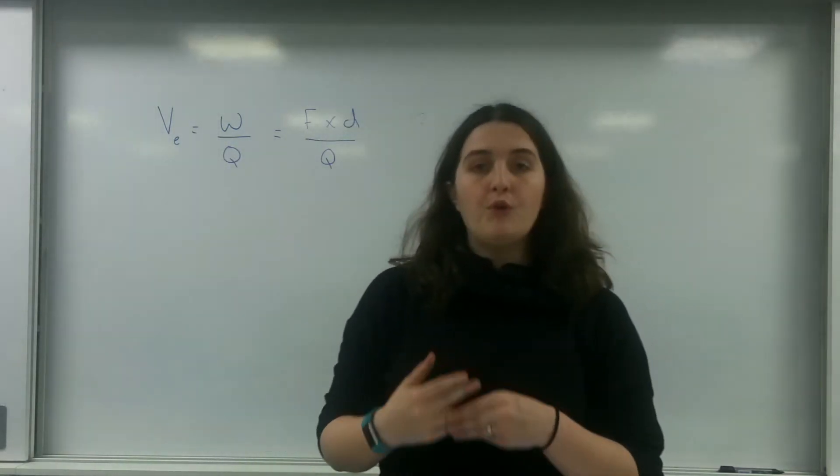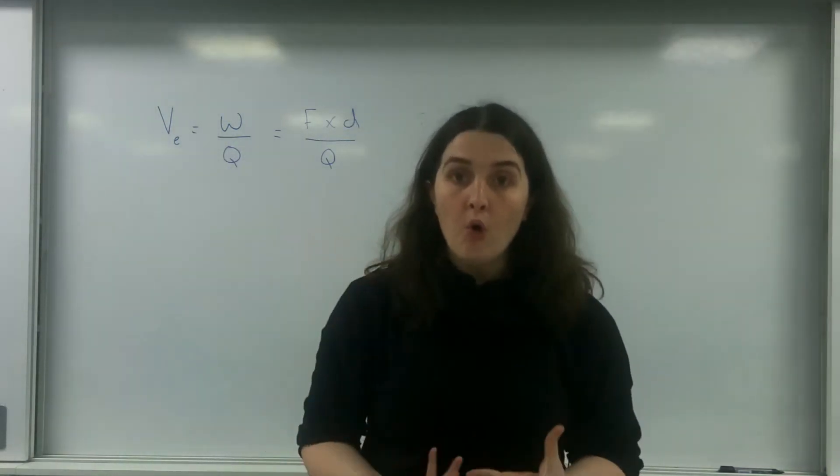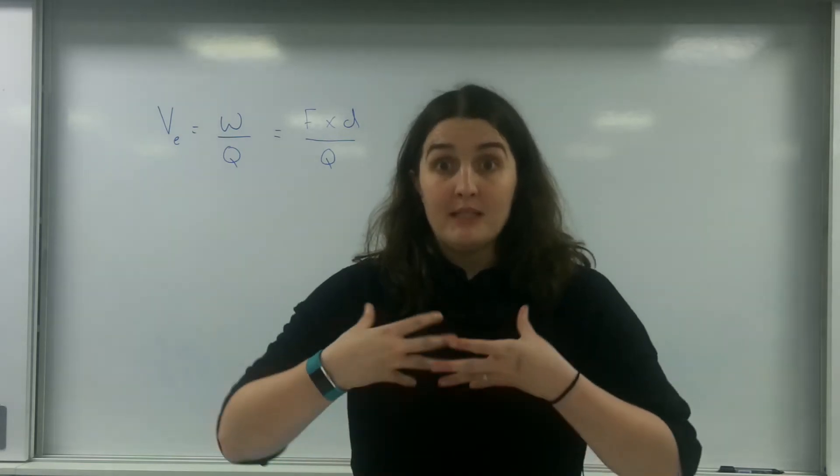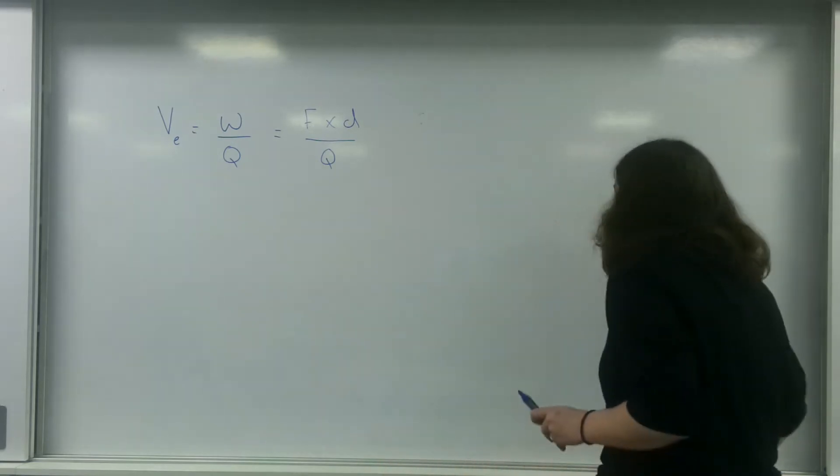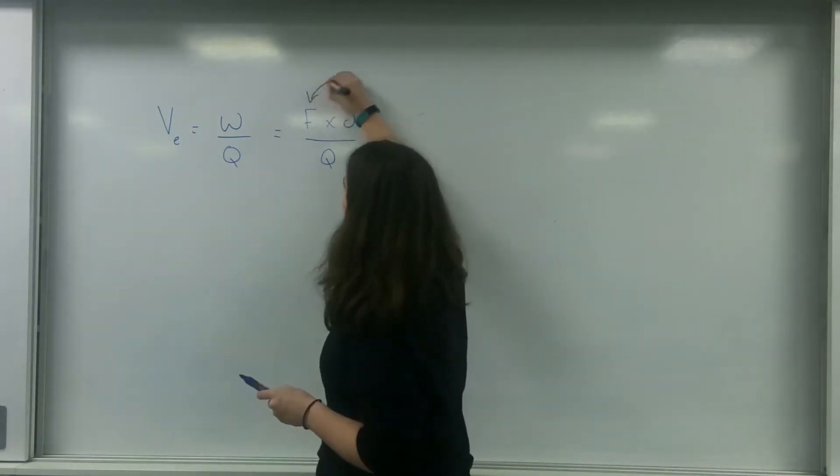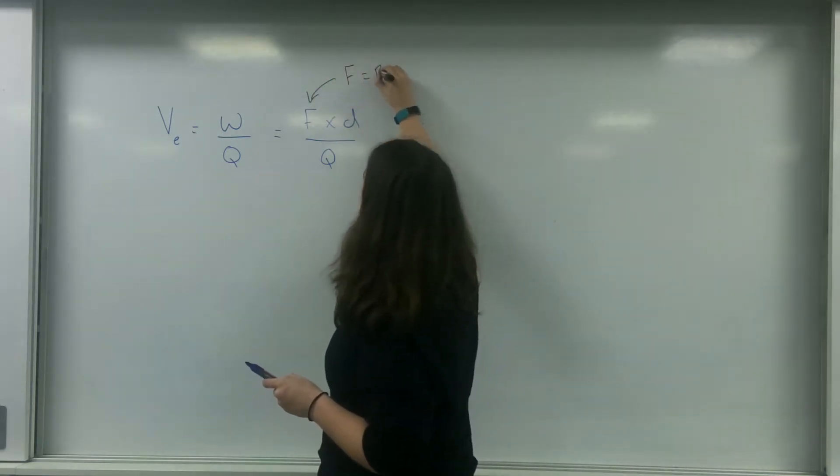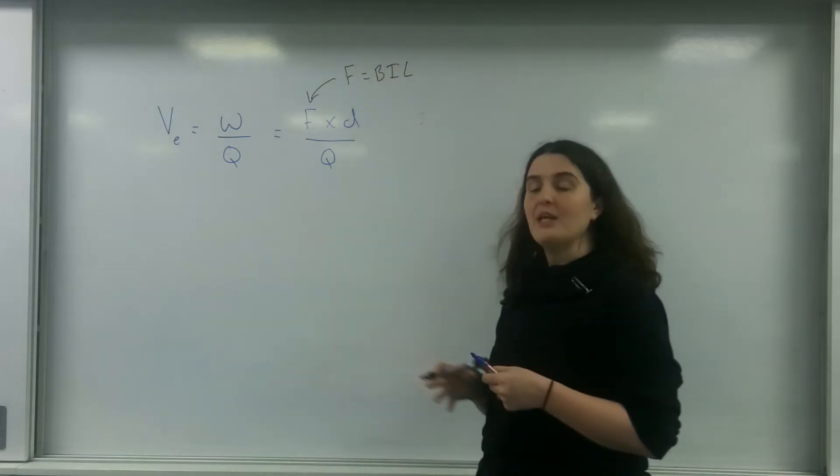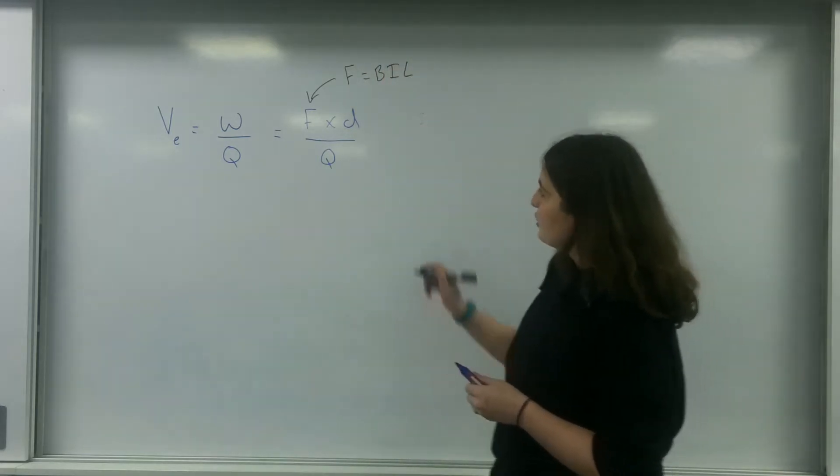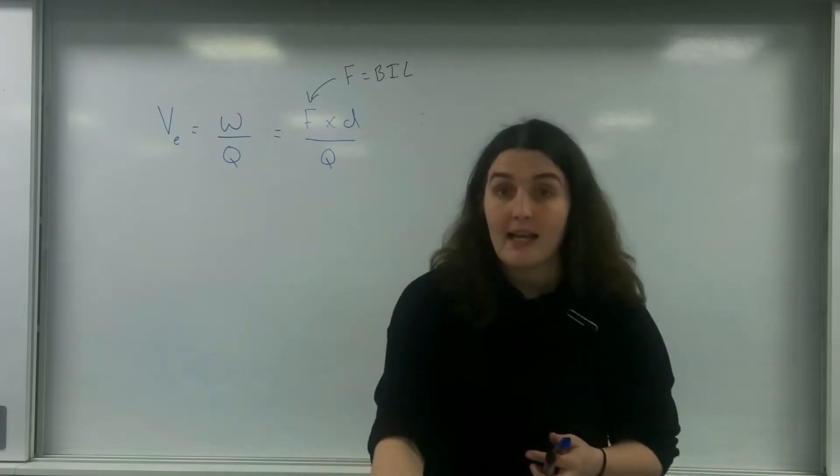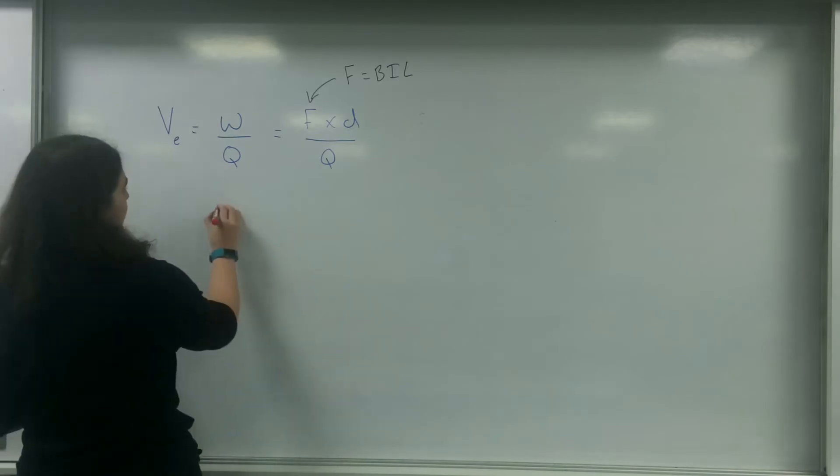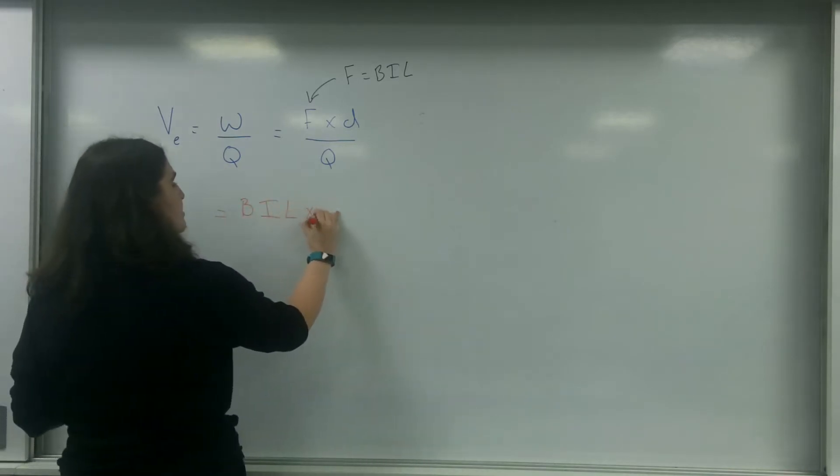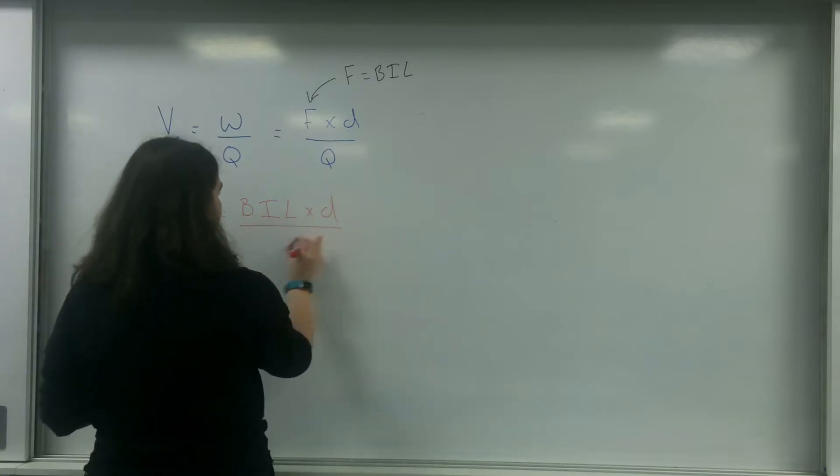The force that is causing this potential to exist is a magnetic one. So I'm going to replace my F here with the force for magnetic. F equals BIL. I'm going to put that in there and I end up with BIL times by the distance over the charge.